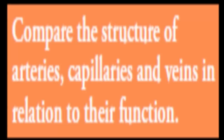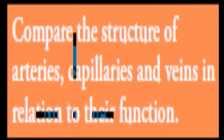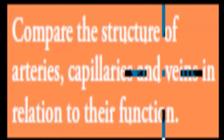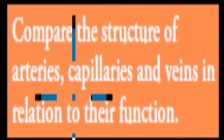Welcome back. In the last video we talked about arterial blood gas analysis and pulse oxymeters, and how those technologies are used to measure oxygen saturation and carbon dioxide concentrations in our blood. What we'll do in this video is move to the next dot point, which is related to blood itself — specifically, compare the structure of arteries, capillaries, and veins in relation to their function.